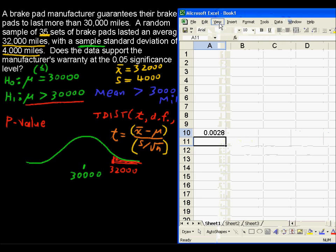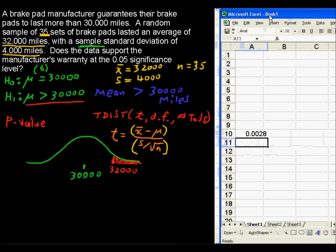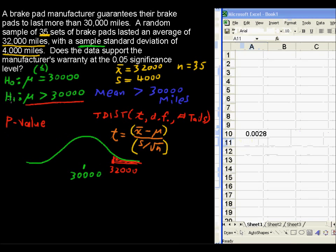Okay, enter, we get our value. That is the p-value. That's the area that is to the right of 32,000. So, our p-value, now I can write this, equals 0.0028.